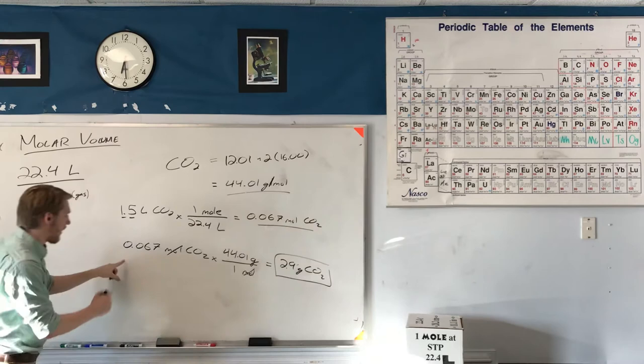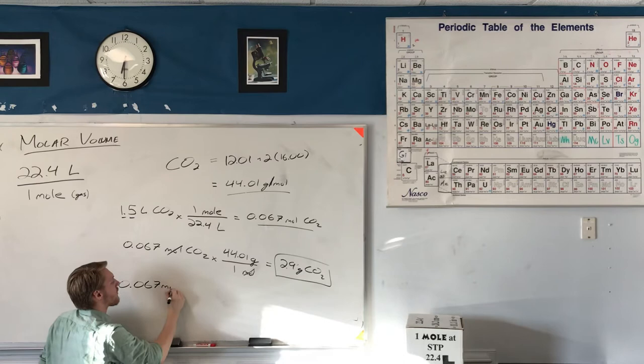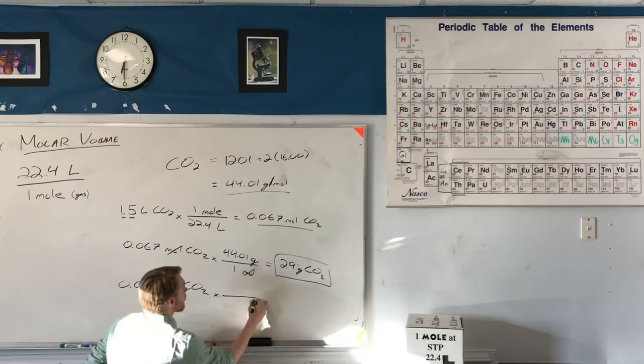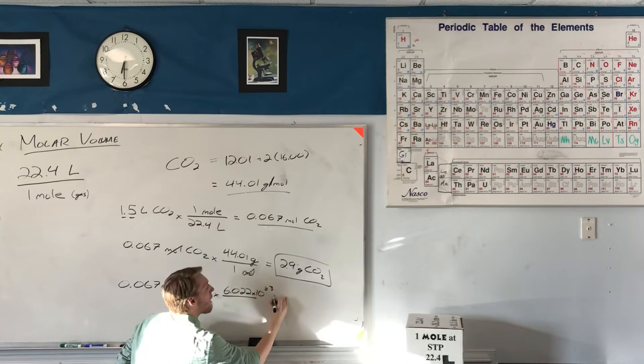I can also go to particles. I will show you that as well. I'm going to start with that many moles, 0.067 moles of CO2, and I can use Avogadro's number. Avogadro's number is 6.022 times 10 to the 23rd.